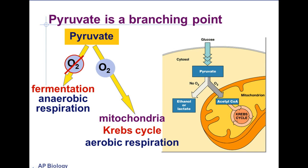Write in your notes that the pyruvate molecules create a branching point. If oxygen is present, the molecules are moved into the mitochondrial matrix to be used in the Krebs cycle in aerobic respiration. However, if oxygen is not present, then these pyruvate molecules will be used in the fermentation process in anaerobic respiration. This process of cellular respiration is part of what's called the cell's metabolism.